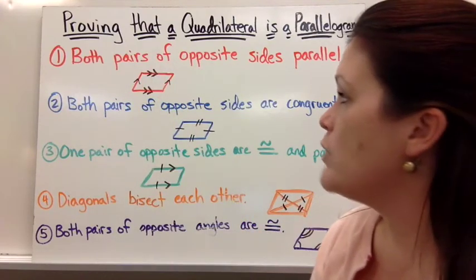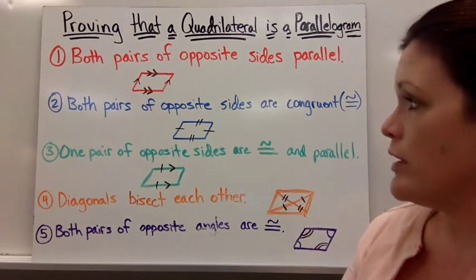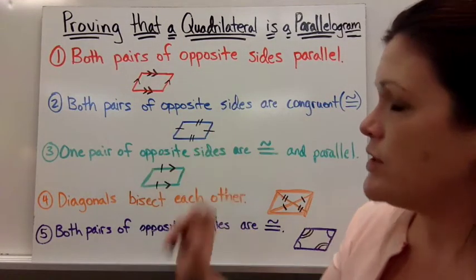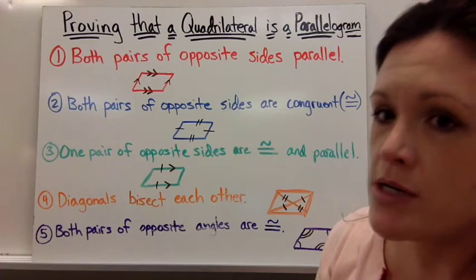Number two is both pairs of opposite sides are congruent. So again, they use different amounts of tick marks to help you understand which pairs are congruent.